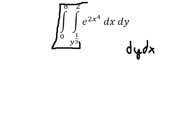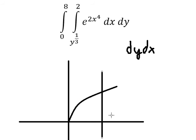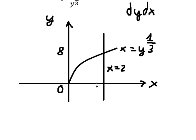We need to sketch this region. We have dx, so x is greater than y to the power of 1/3 and smaller than 2. The sketch should look like this — this curve is x equals y to the power of 1/3, and this line is x equals 2. For y, it goes from 0 to 8.